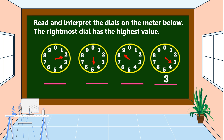For the next dial, the arrow is in between eight and nine. Again, when it is between two numbers, we record the lower number. So the answer is eight.